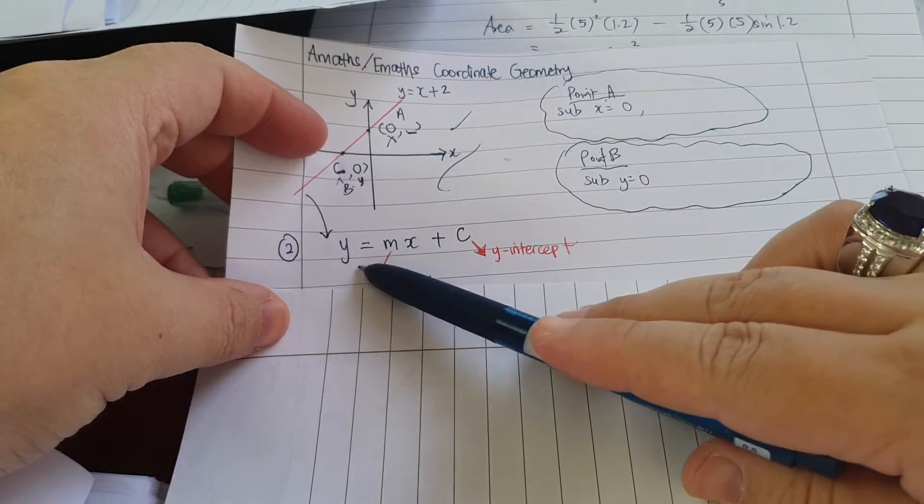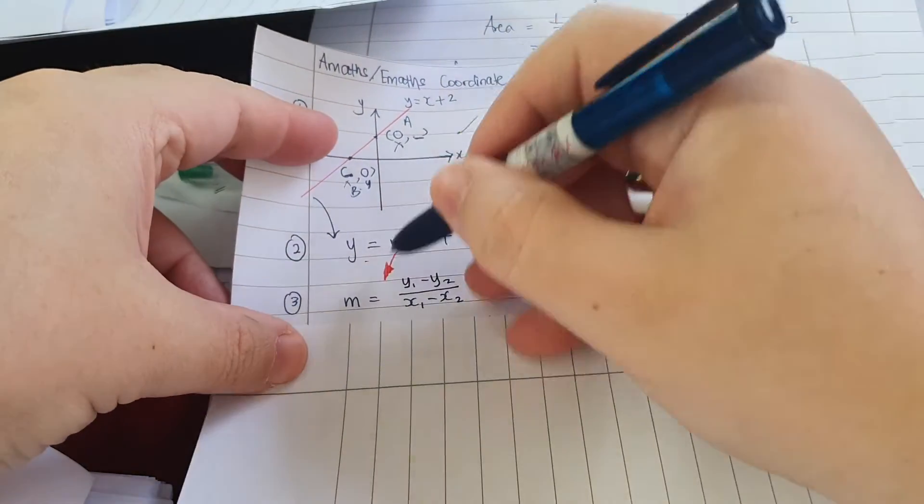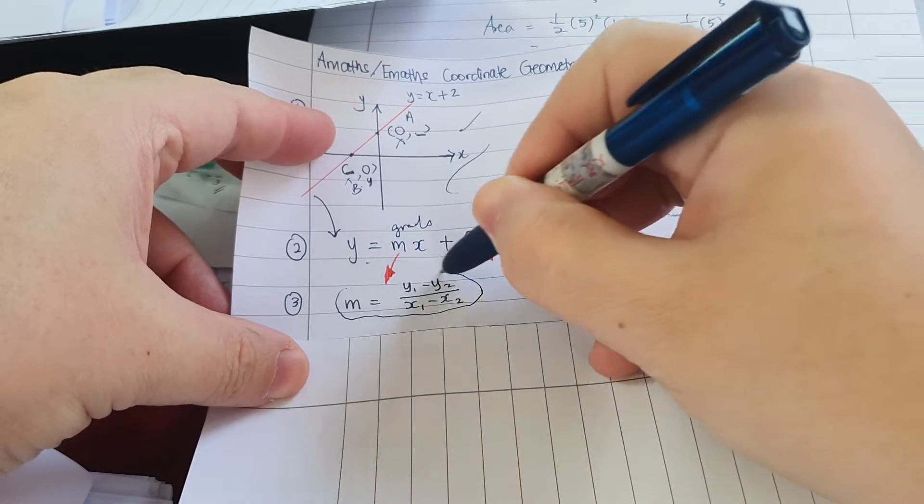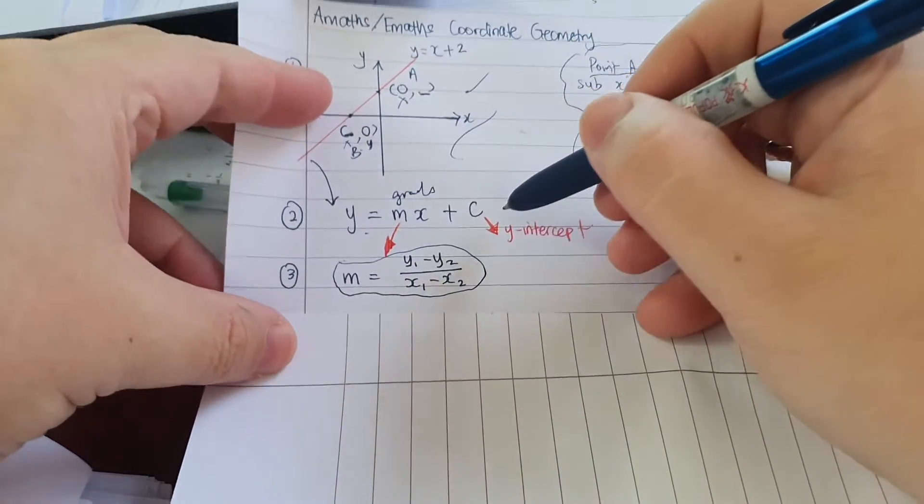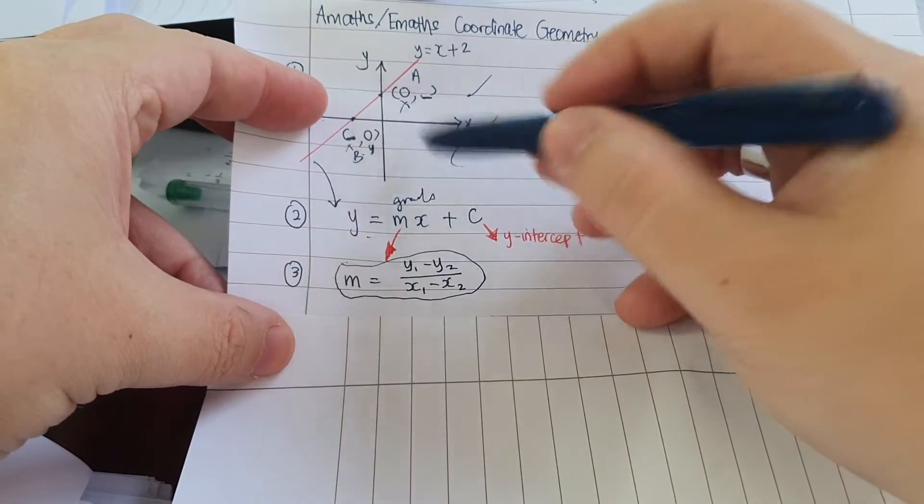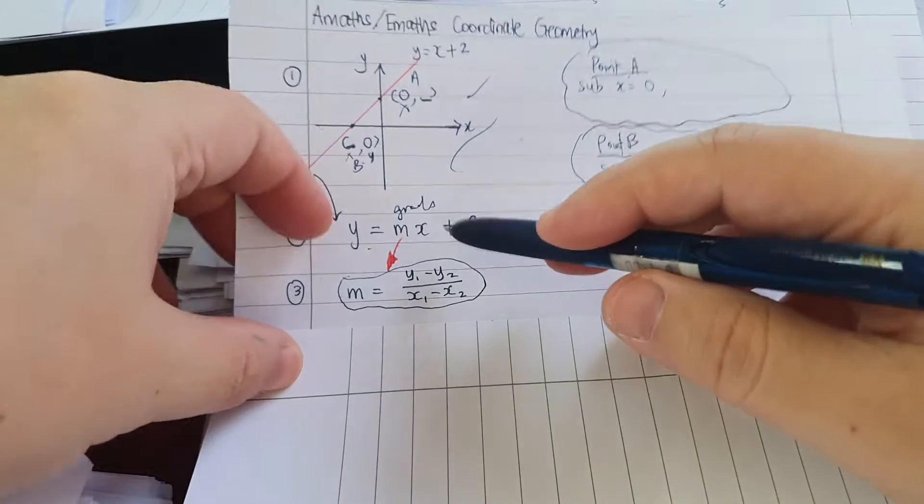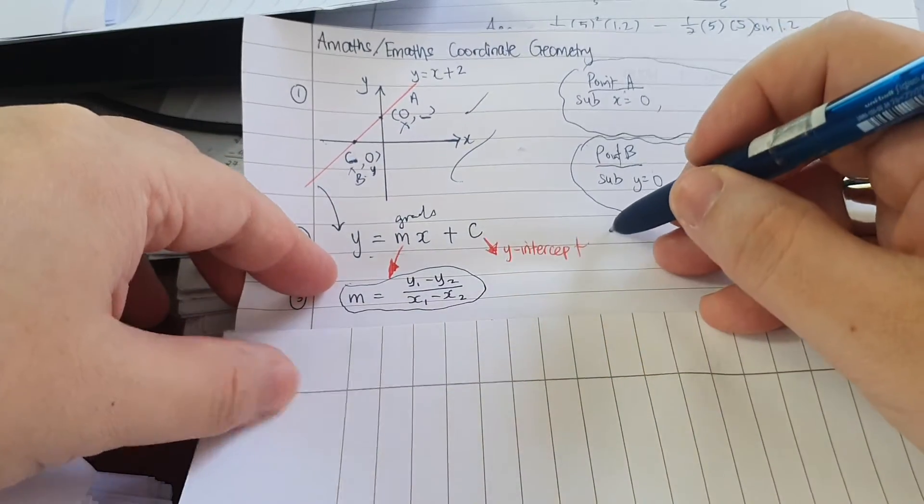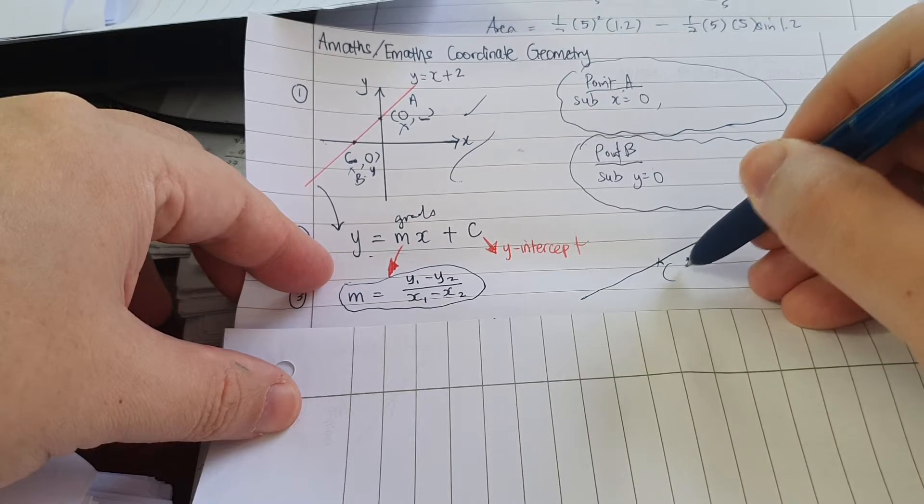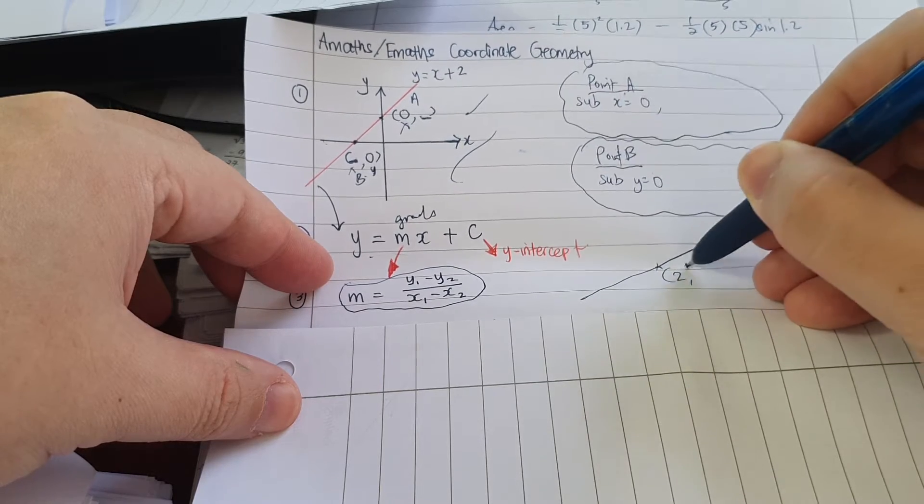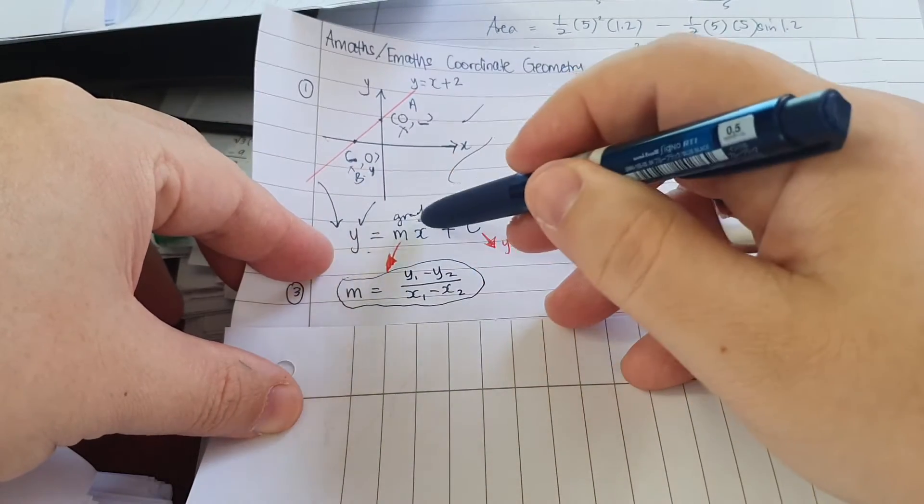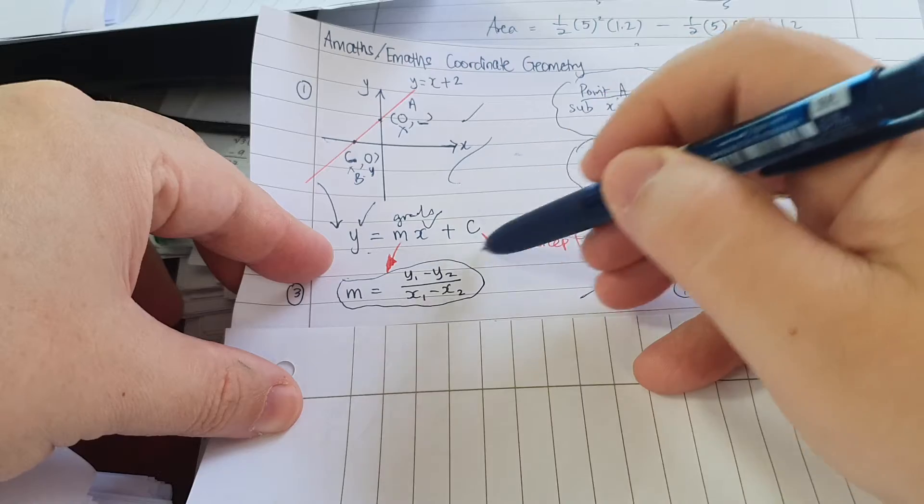Now, all straight lines can be written in this form, Y equals MX plus C, where this is your gradient. The formula to find gradient is this: it's Y over X. And this is the Y intercept, so this is your C. But how do you find the equation of a line? Very simple. You need firstly a point, let's say two, three. A point will give you the X and Y value, then you sub in here.